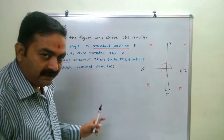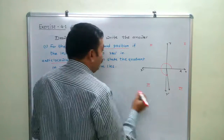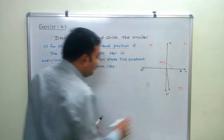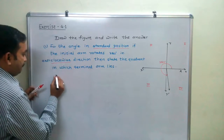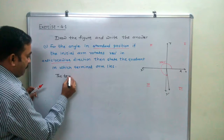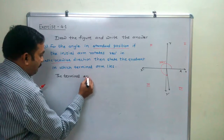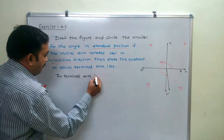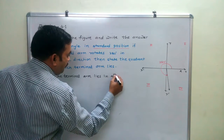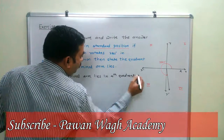Since the rotation is in the anticlockwise direction, the angle should be positive — positive 280 degrees. And the terminal arm lies in the 4th quadrant.